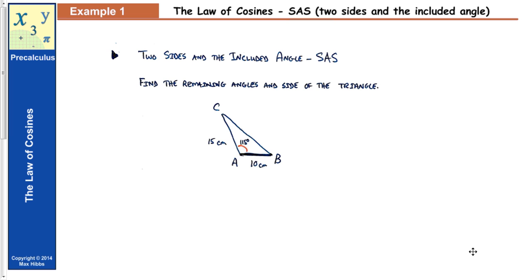Let's look at a problem. In real applications, the problem generally won't tell you which law to use. Here we're given a triangle where we know one angle: angle A is 115 degrees. We know two sides — 10 centimeters, which is opposite angle C, so that's side C, and 15 centimeters, which is opposite angle B, so that's side B.